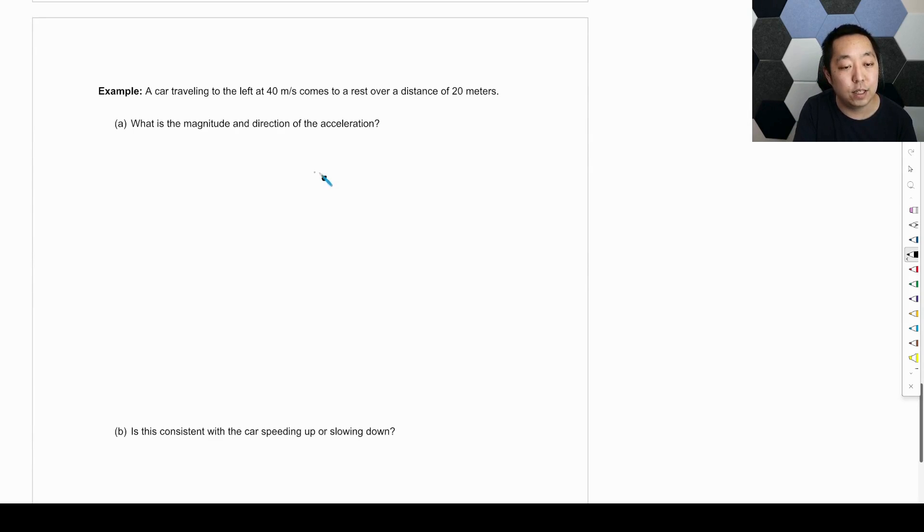So let's take a look at this. We have a car that's traveling to the left at 40 meters per second. It comes to a rest over a distance of 20 meters. So rest means it's stopped. And that distance from there to there is 20 meters. We want the magnitude of the direction of the acceleration. So which way do we want to make positive? Let's make right positive. It doesn't matter. If they don't define the positive direction, you define what is the positive direction.